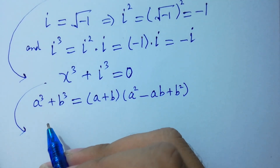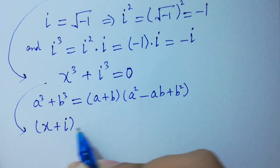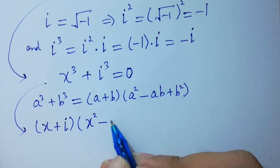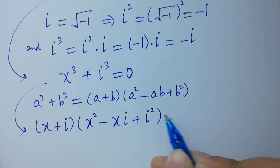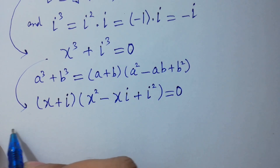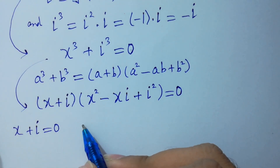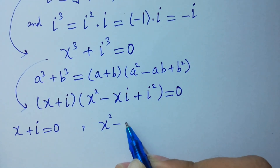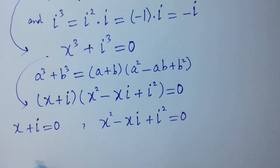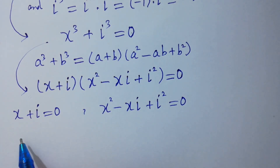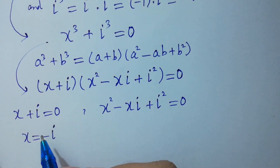Applying this factorization to x³ + i³ = 0, we get either (x + i) = 0, giving us x = -i, or the quadratic factor x² - ix + i² = 0 equals zero.